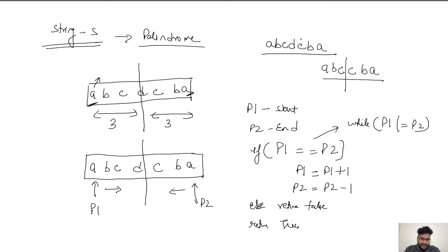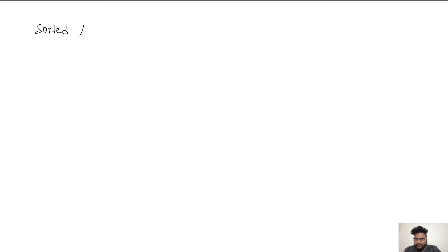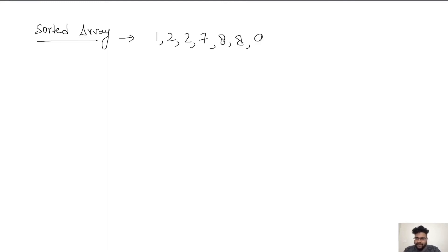This kind of two pointer technique is also known as index-based two pointer technique, which we'll cover in later sessions. Let's take up one more example — suppose we are given a sorted array, and we have to remove all duplicates from this sorted array.